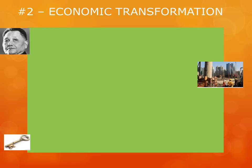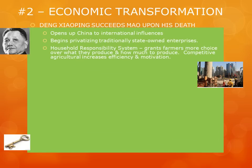Deng Xiaoping, Mao's successor, set to work immediately on reforming the Chinese economy. He opened it up to international influences in trade, began privatizing many of the state-owned enterprises, and instituted the household responsibility system, which granted farmers more choice over the products they produced and how much they wanted to produce. Making it more competitive actually increased efficiency and motivation for farmers.